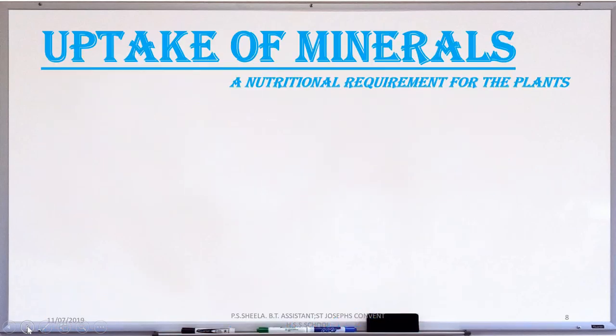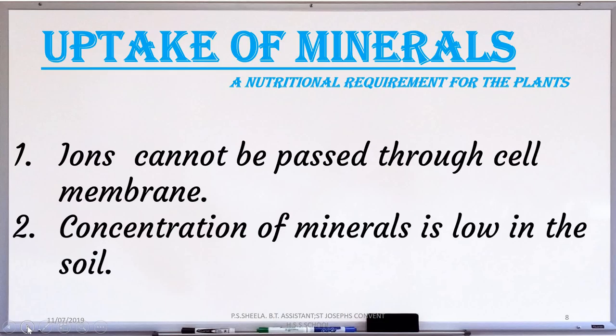Next is the uptake of minerals. During the uptake of minerals from soil, all the minerals cannot be passively absorbed. It is because of two factors. First, minerals are present in the soil as charged particles and so cannot move across cell membranes. Second, the concentration of the minerals in the soil is usually lower than the concentration of minerals in the root. Therefore, most minerals enter the root by active absorption, and this needs energy in the form of ATP.